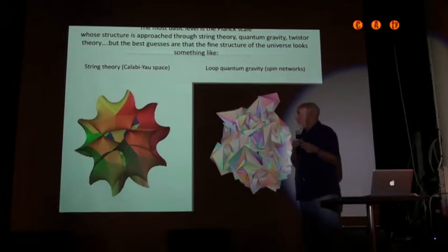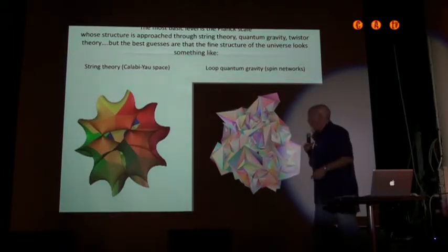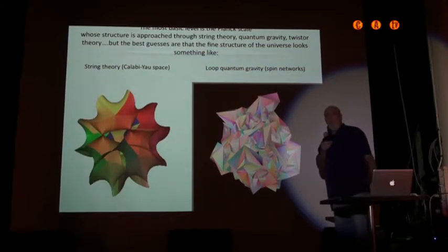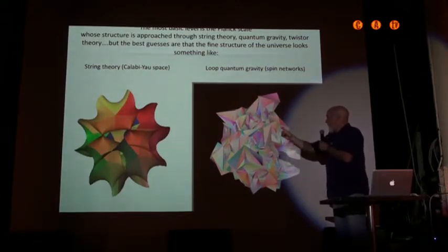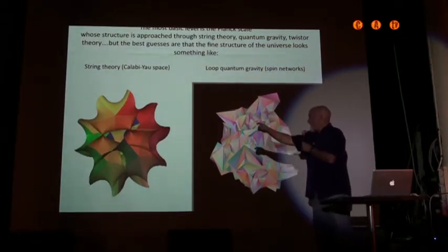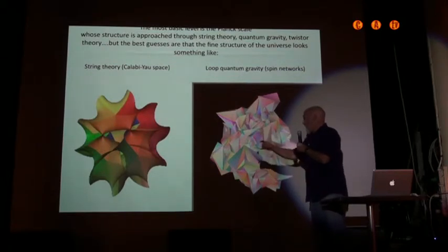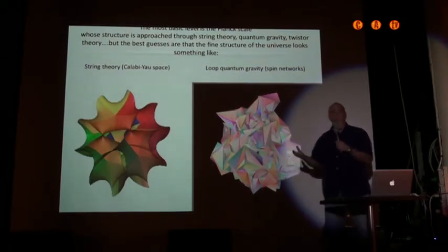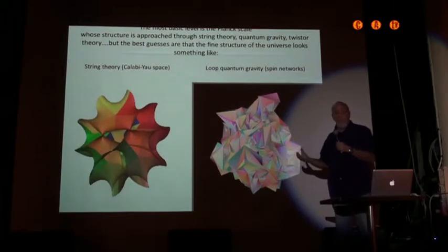And here's two pictures of it. One comes from string theory and one comes from loop quantum gravity, what Planck scale geometry might look like. And the point here is that the average length of these voxels, or the edges, are average one Planck length, 10 to the minus 33 centimeter.